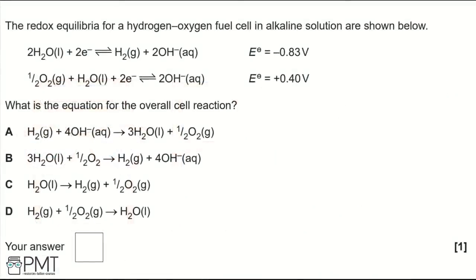The redox equilibria for a hydrogen-oxygen fuel cell in alkaline solution are shown. What is the equation for the overall cell reaction? A: H₂(g) + 4OH⁻(aq) → 3H₂O(l) + ½O₂(g). B: 3H₂O(l) + ½O₂ → H₂(g) + 4OH⁻(aq). C: H₂O(l) → H₂(g) + ½O₂(g). D: H₂(g) + ½O₂(g) → H₂O(l).